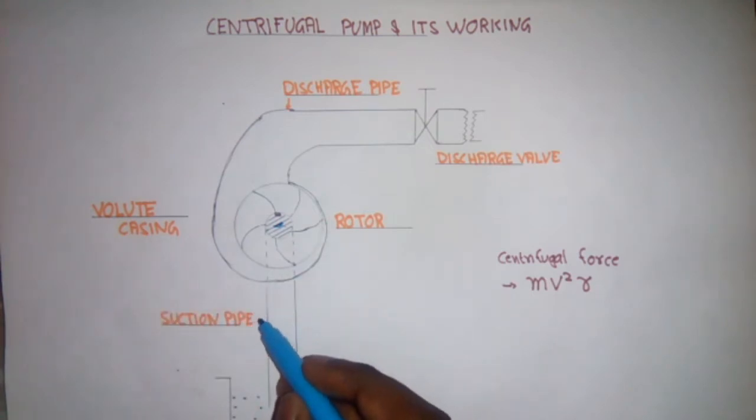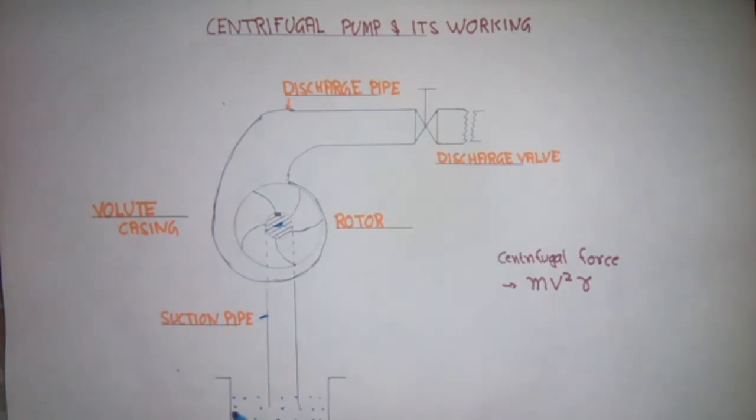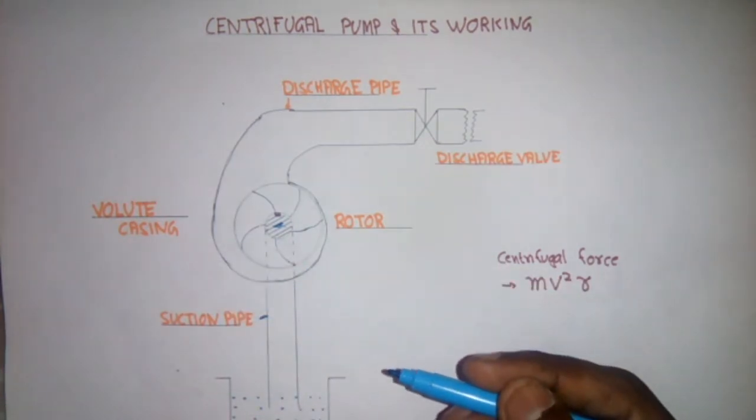Suction pipe that is connected to the suction side of the pump and tank where the water will be sucked by the pump. Now, I will explain how the centrifugal pump will work.